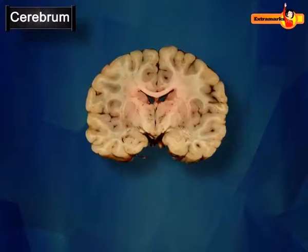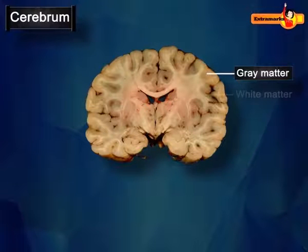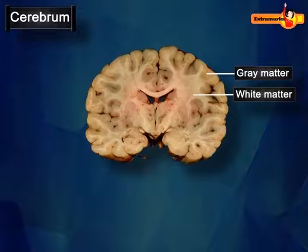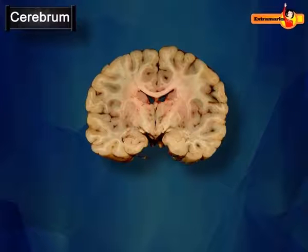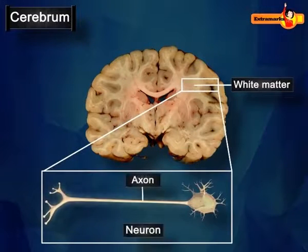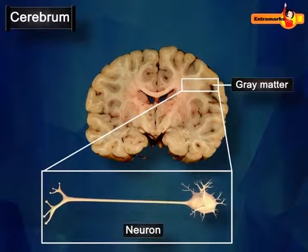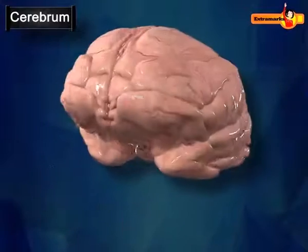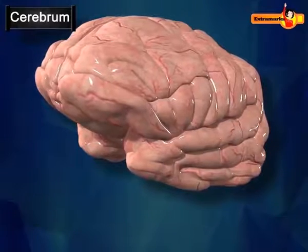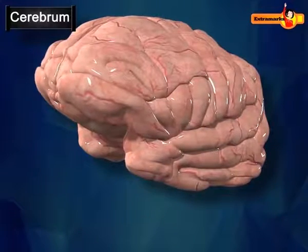The white matter mainly consists of axons of neurons. The gray matter contains cell bodies of neurons. The gray matter is highly folded to form convolutions.